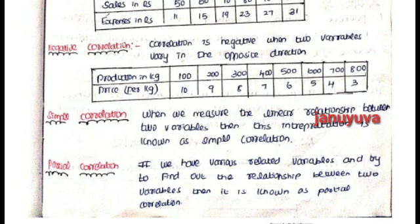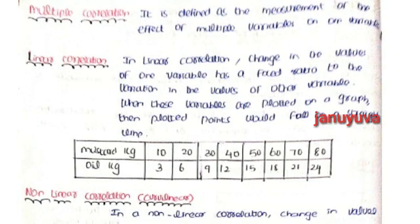Next, Simple Correlation — if we study 2 variables in relationship, that is Simple Correlation. Next, Partial Correlation. Next, Multiple Correlation — this is a measurement of multiple variables. Next, Linear Correlation.